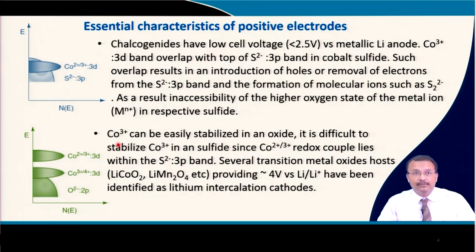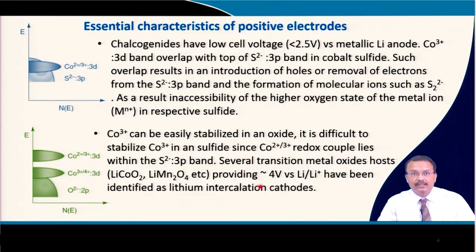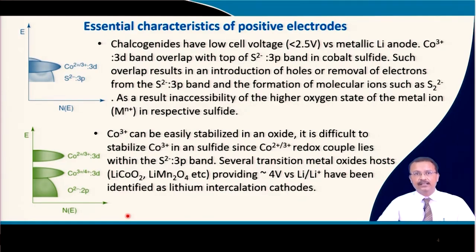In layered oxides, cobalt 3+ can easily be stabilized, whereas it is difficult to stabilize cobalt 3+ in a sulfide, since the redox potential of Co²⁺/Co³⁺ lies within the S²⁻ 3P band. But several transition metal oxides — for example lithium cobalt oxide and lithium manganese oxide — provide 4 V versus metallic lithium. These oxides have been identified as intercalation cathode materials for lithium-ion batteries.